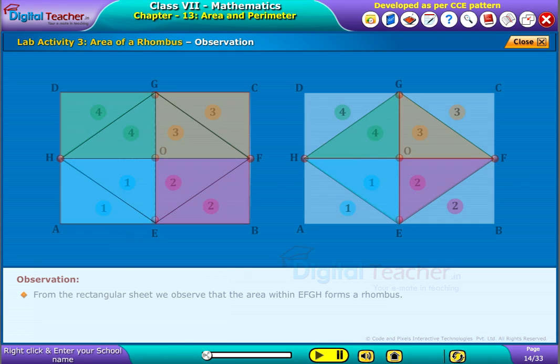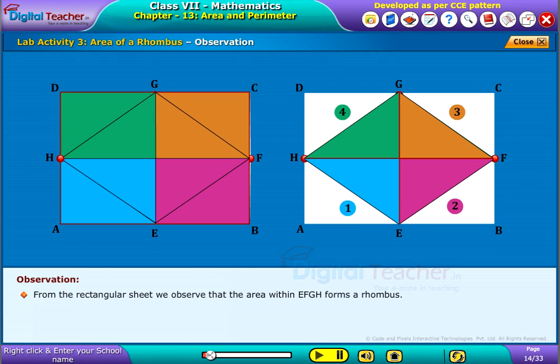From the rectangular sheet, we observe that the area within EFGH forms a rhombus.